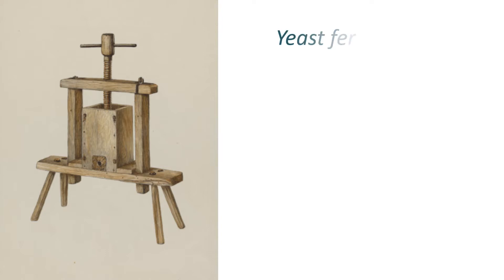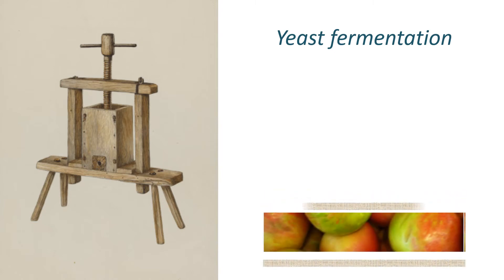Another sheet of hessian is placed on top of the first one and the process is repeated until the layers fill the frame. The cider press is then racked down onto the layers and the juice runs into the trough. The pomace is pressed until it is solid and no more juice runs out.